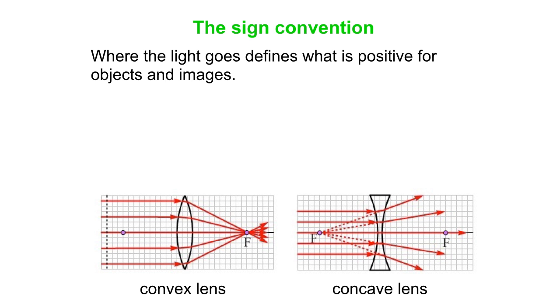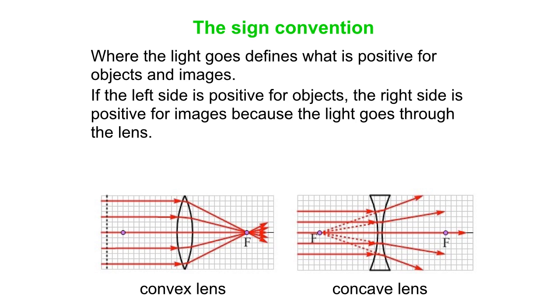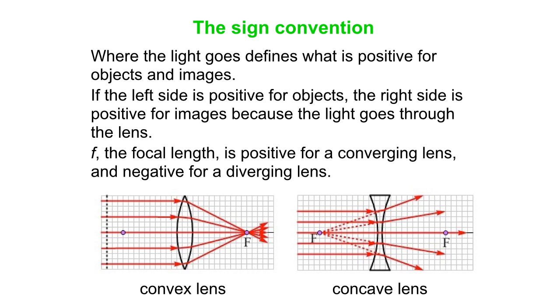Our sign conventions, again, similar to what we did for mirrors. But the positive side is a little bit different. The light defines what is positive for objects and images. Typically, we have the object on the left-hand side and then the light goes through the lens and may form an image on the other side. Well, that would be the positive side because the light is going over there. So the left side is positive for objects. Typically, the right side is positive for images when we're talking lenses. That's not the same as what we did for mirrors. F, again, is positive for a converging lens and negative for a diverging lens. That was similar to our rule for mirrors.